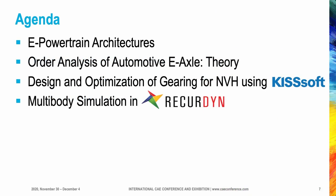Let me first introduce the agenda of this talk. We will start discussing the actual e-powertrain architectures, then go on by presenting the theory fundamentals of order analysis for automotive e-axles. With regard to a case study e-axle, the design and optimization of gearing for NVH using Keysoft is introduced, and finally the multi-body simulation in Recurdyne using the drivetrain toolkit interface is presented.